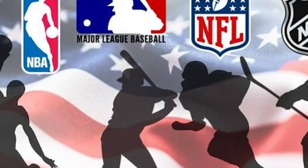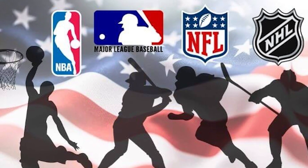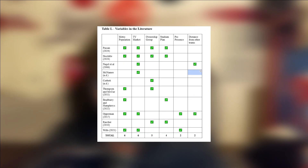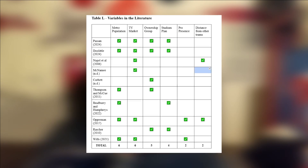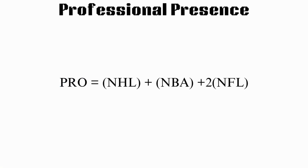The final variable is a multi-step system that follows similarly to the overall weighting system. The presence of other professional sports teams appeared only two times in literature; however, some of the most significant correlations were seen when it showed itself. In Craig Wills' study, he showed a high correlation of 85% of MLB cities also having an NFL team. Within this variable, I'll be using a simplified version of the weighting system to determine the significance of professional sports teams. The formula shown on screen is used for this variable, where the variable 'pro' is the value being found, each league is represented by its name, and a coefficient of 2 is placed in front of the NFL.